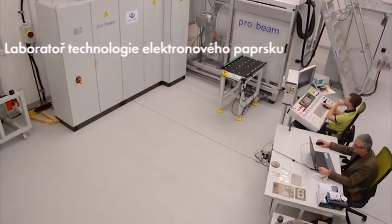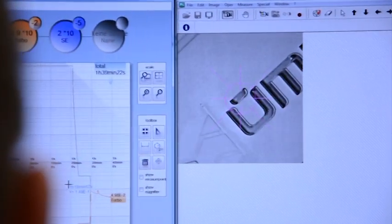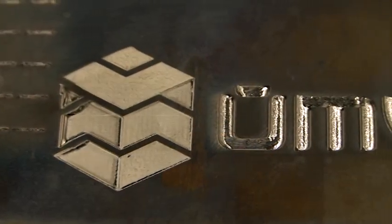Laboratoř elektronového paprsku vznikla v rámci globálního projektu NETMI s přispěním Evropské unie jako platforma pro pojení Ústavu materiálových věd a inženýrství a průmyslu České republiky.